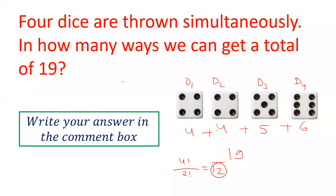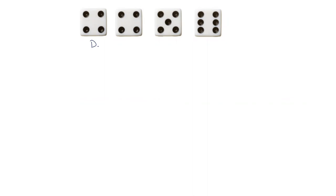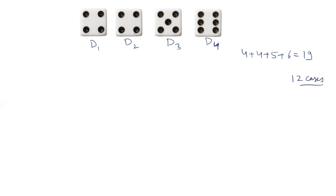Try to figure out the question — see if you can solve it manually. Otherwise, I am going to give you a shortcut formula. So let's see how we can solve this. The four dice are D1, D2, D3, D4, and one way of getting 19 is 4 + 4 + 5 + 6 = 19. As mentioned, that gives 12 permutation cases.